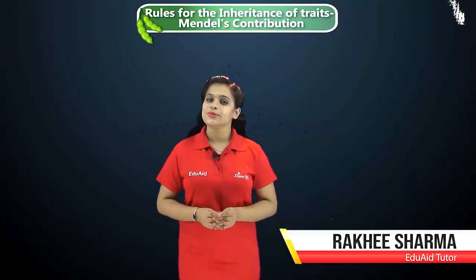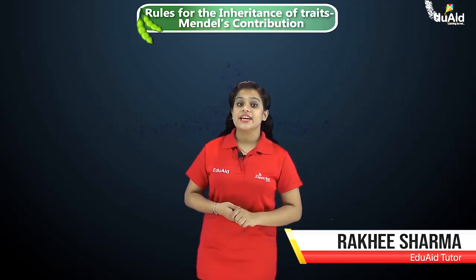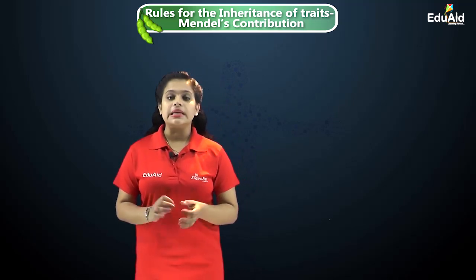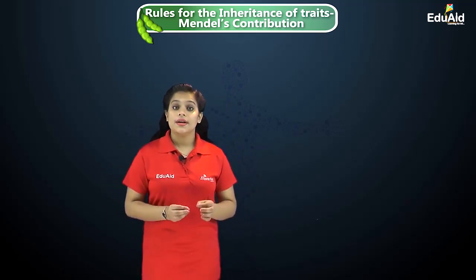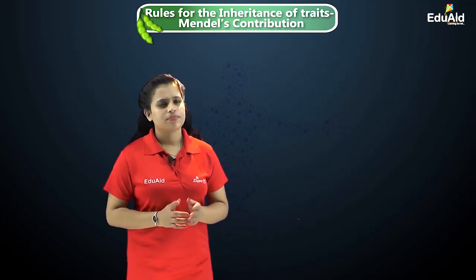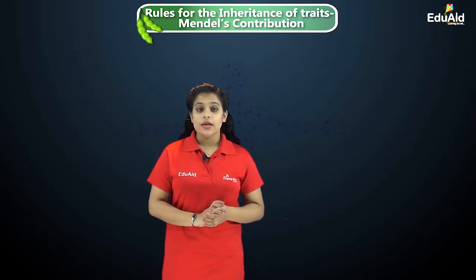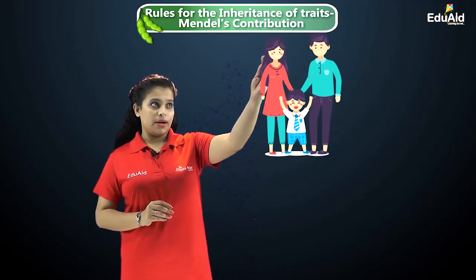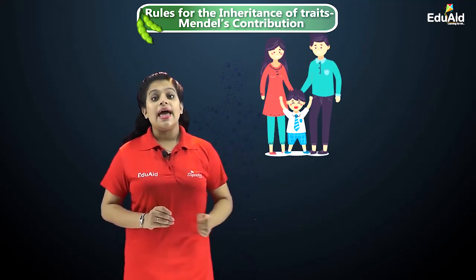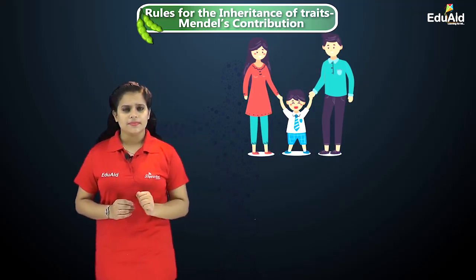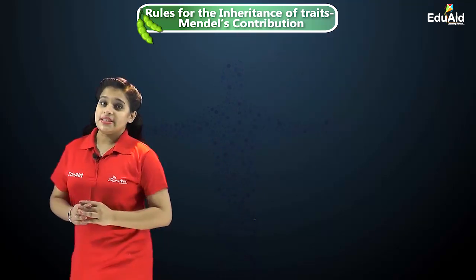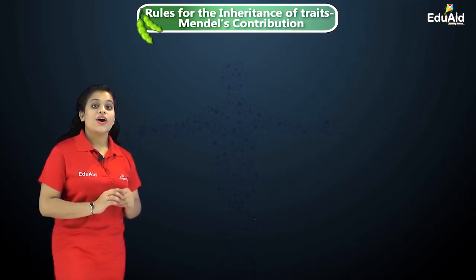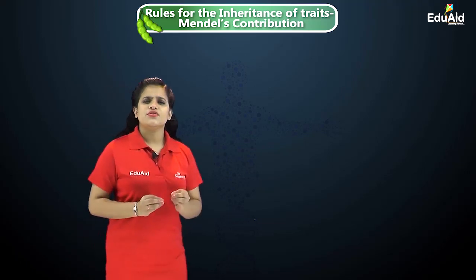Hello students, welcome to Edu8. In our previous session we learned about the significance of accumulation of variation. In this session we learn about the rules for inheritance of traits. Today we know that every child's genetic material has equal contribution from both mother and father, and there are two versions of each trait in a child. The question is: which version is expressed in the formation of a child?